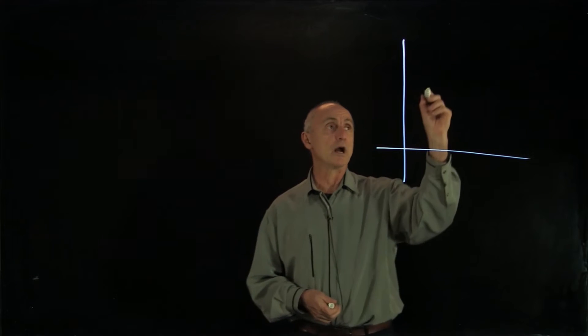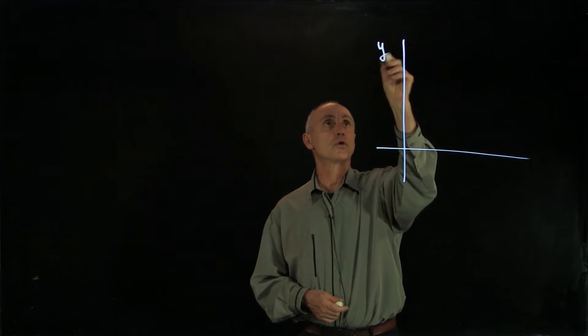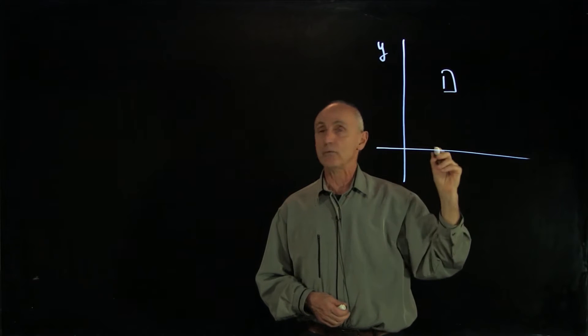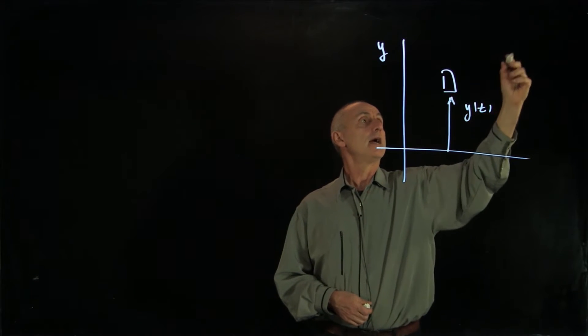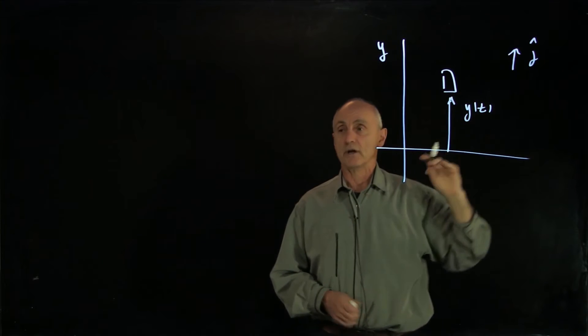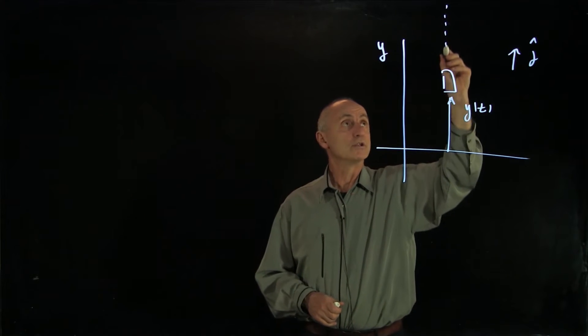What we're going to consider is a rocket. I'm going to choose a coordinate system y. Here's my rocket. I have a function y of t and a j hat direction, but this will be a one-dimensional motion.